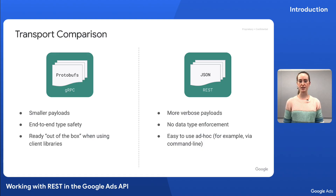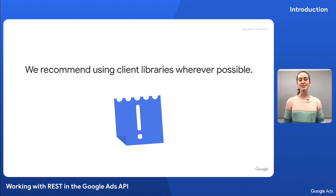With REST by itself, we don't get the data type safety we got with gRPC, and for the most part, REST is not supported out of the box when using the client libraries, though a couple of our client libraries do use REST under the hood. One benefit of using REST is that it's easy to use ad hoc with tools like curl and Postman. We do recommend using client libraries wherever possible — there's an abundance of examples and utilities at your disposal, and the efficiency and type safety of gRPC makes them a great choice for scalable applications.